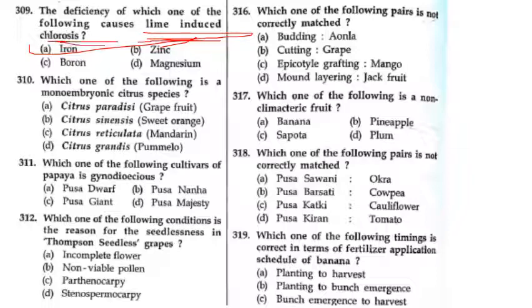One of the following is a Monoembryonic Citrus species. The answer is Pumelo — this is a grand isle.